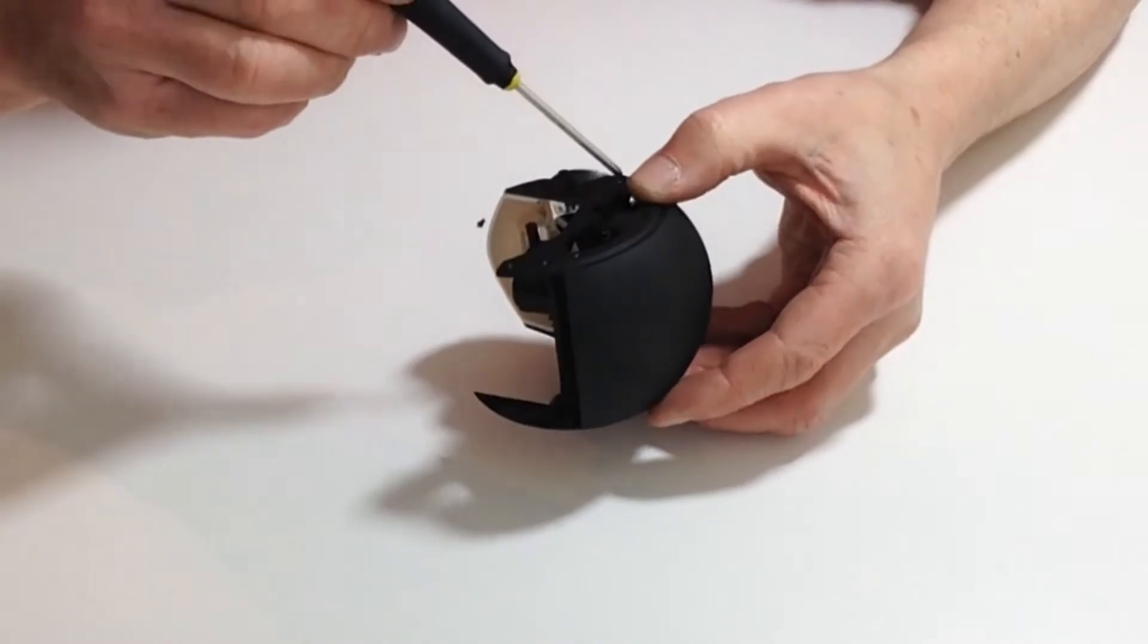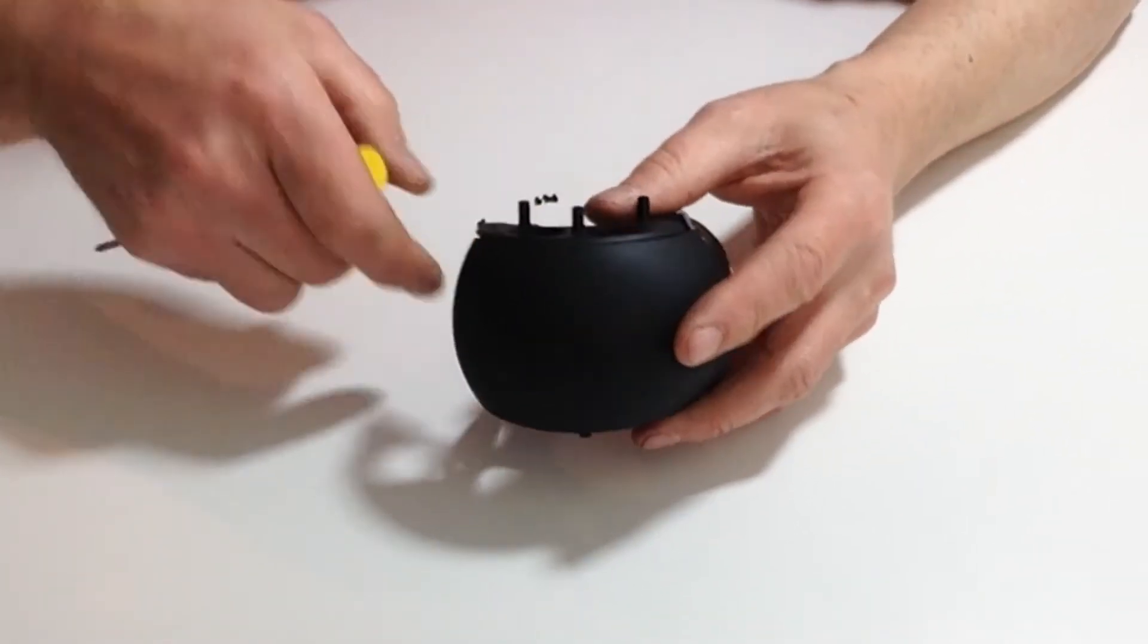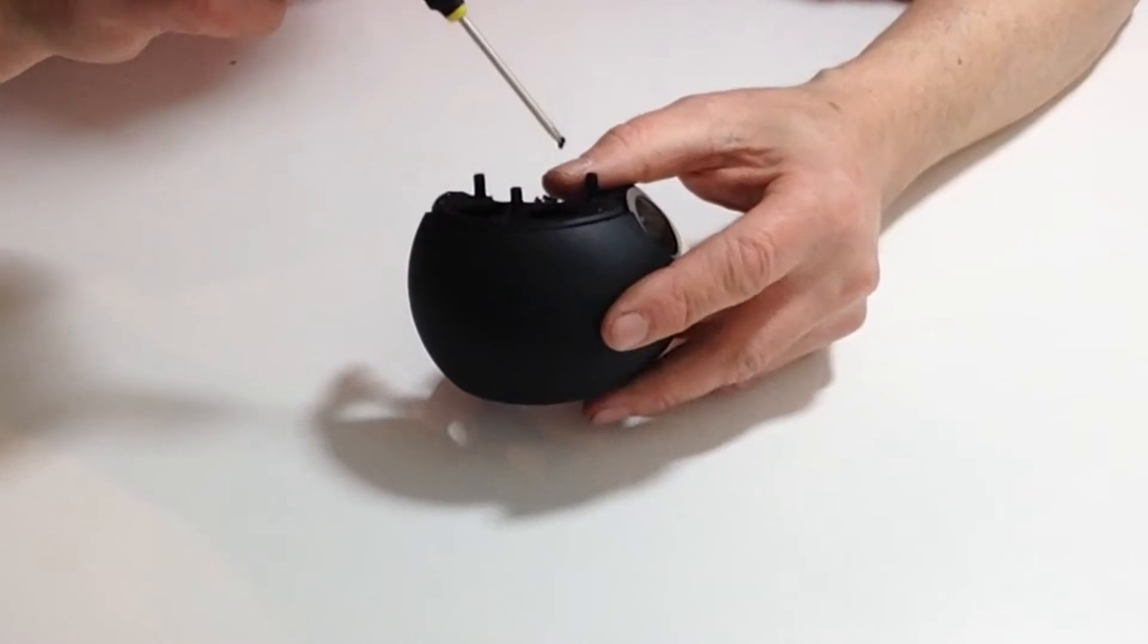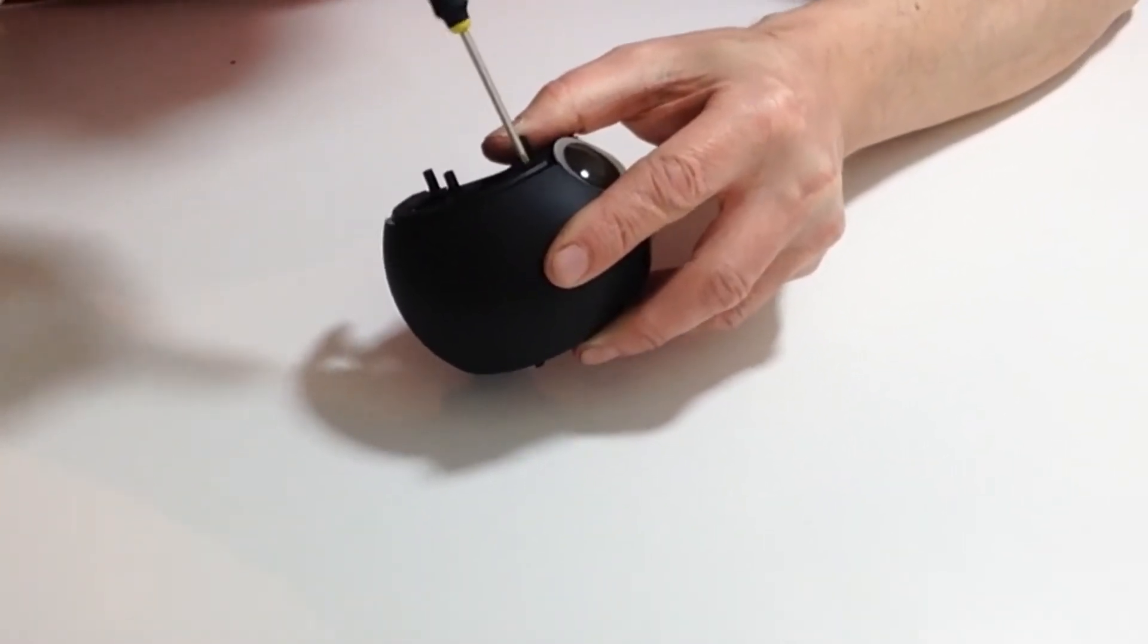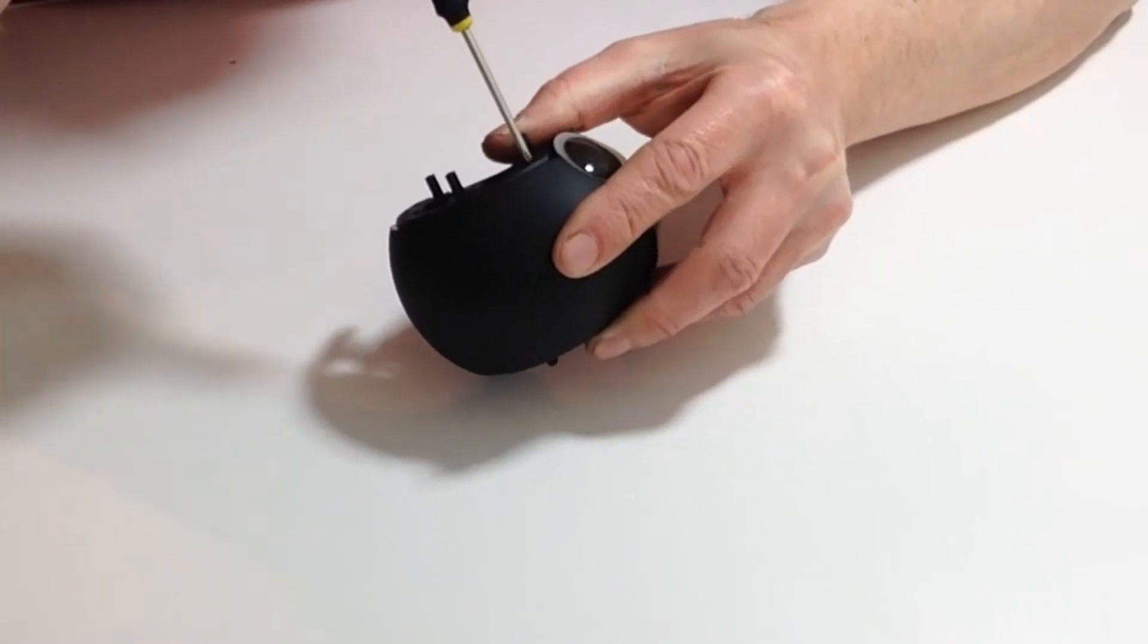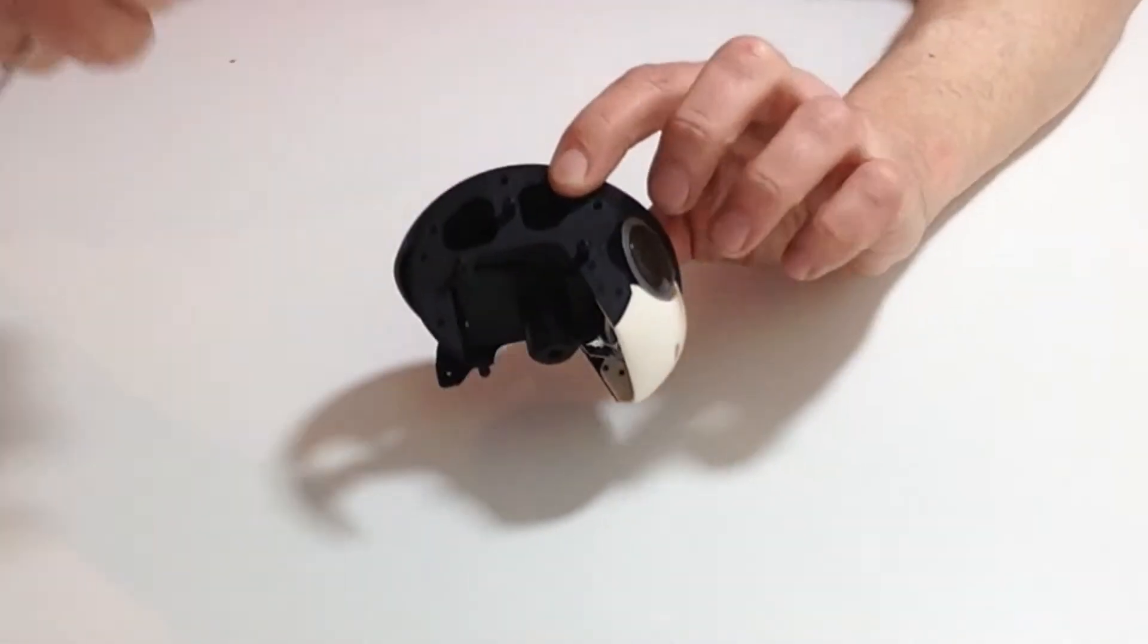You need three of the M2 4.5mm screws down one side. Once you've done that, turn it around and then do exactly the same for the other side.